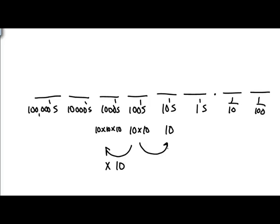Every time you go one step to the right, you divide by ten. And ten divided by ten is one, and one divided by ten is one tenth, and so on.